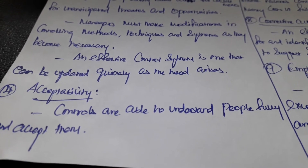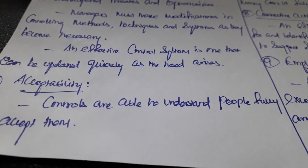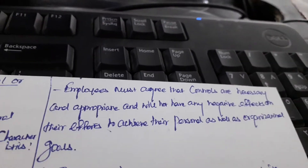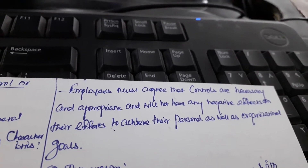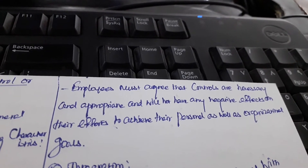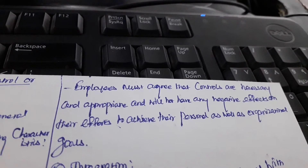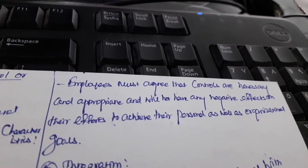Subordinates must understand and accept controls — only then will control be effective. Employees must agree that controls are necessary and appropriate and will not have any negative effects on their efforts to achieve their personal and organizational goals.